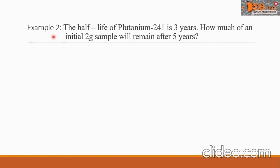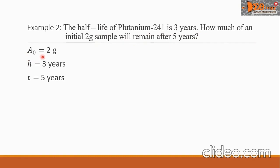Example 2. The half-life of plutonium-241 is 3 years. How much of an initial 2-gram sample will remain after 5 years? Let us collect the given: A-sub-zero equals 2 grams, H equals 3 years, and T equals 5 years. Let us write our formula and substitute the values.